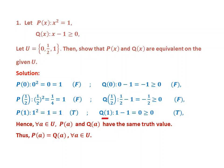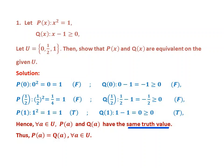Hence, for every element a of U, P(a) and Q(a) have the same truth value — false, false — at x = 1 as well. Thus, P(a) = Q(a) for every a in U. Therefore, P(x) and Q(x) are equivalent on the given set U.